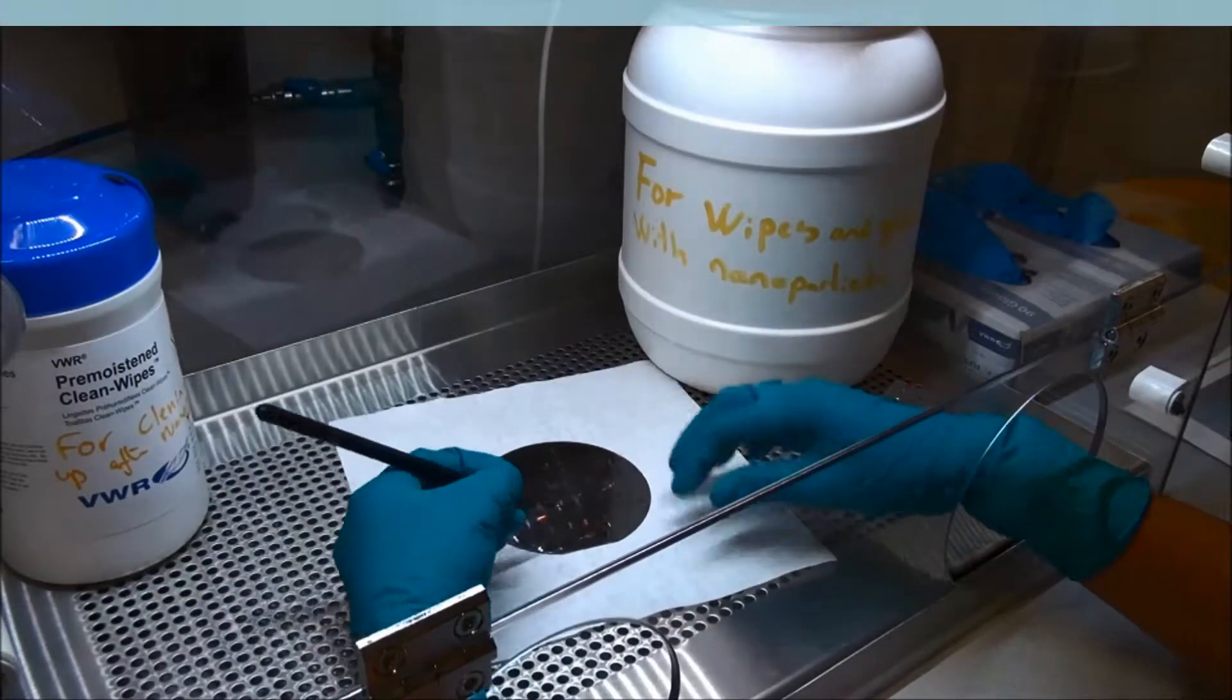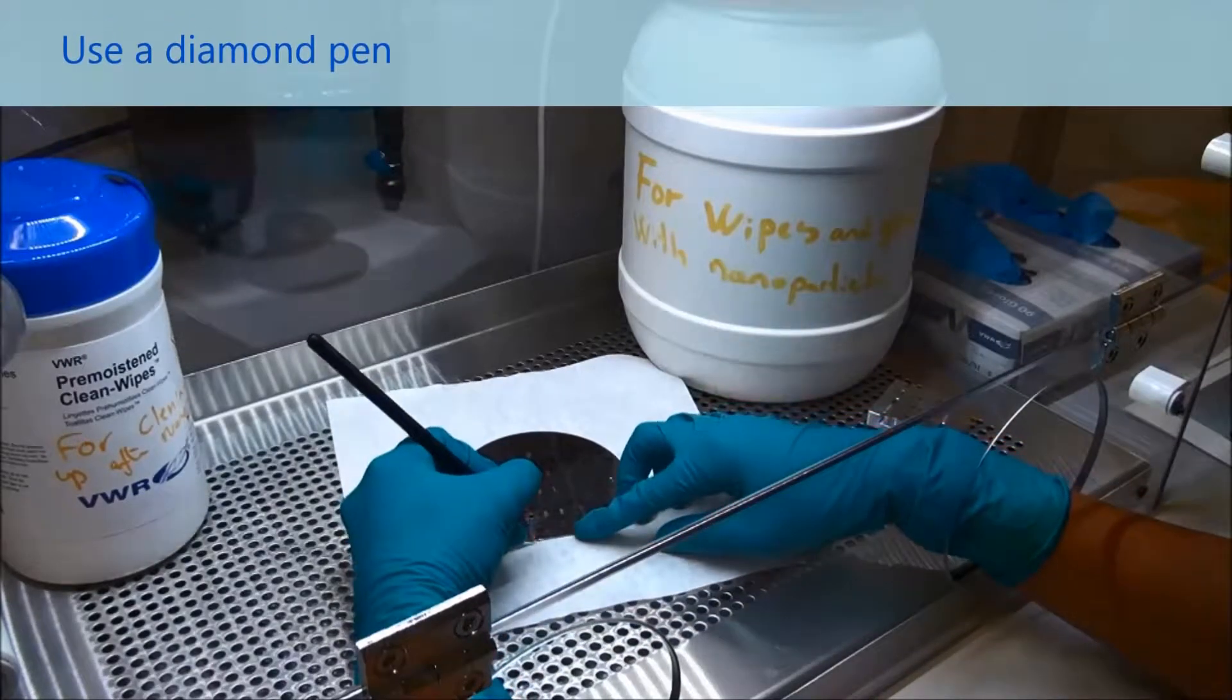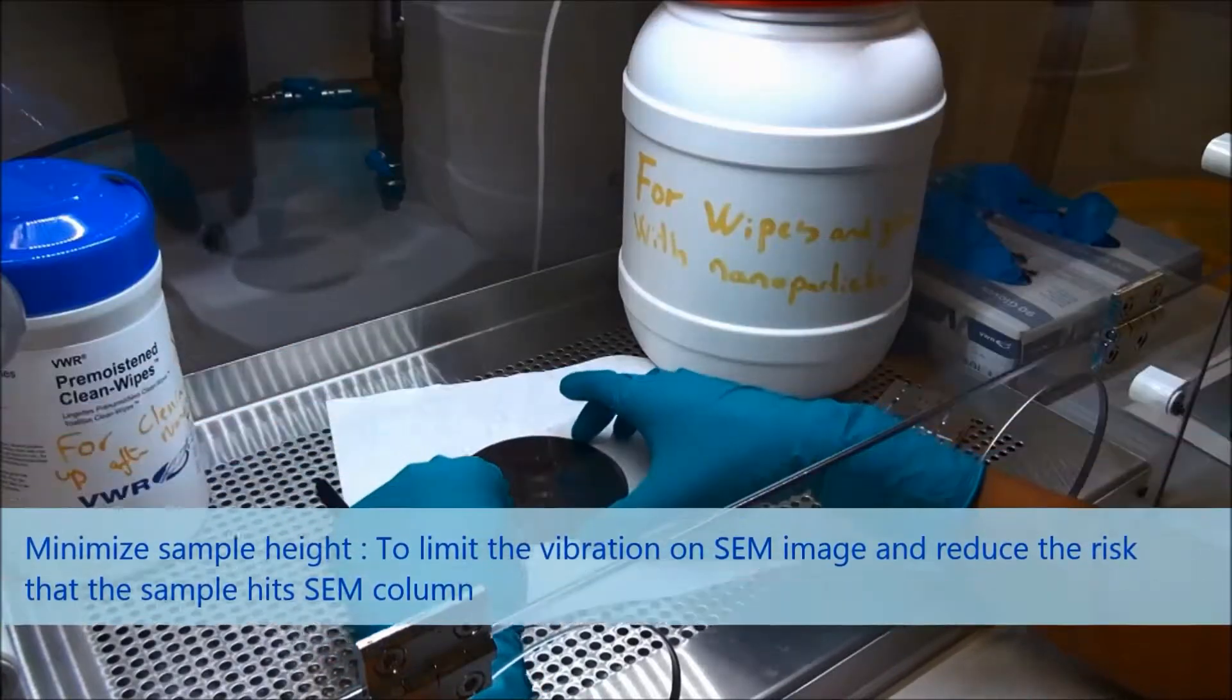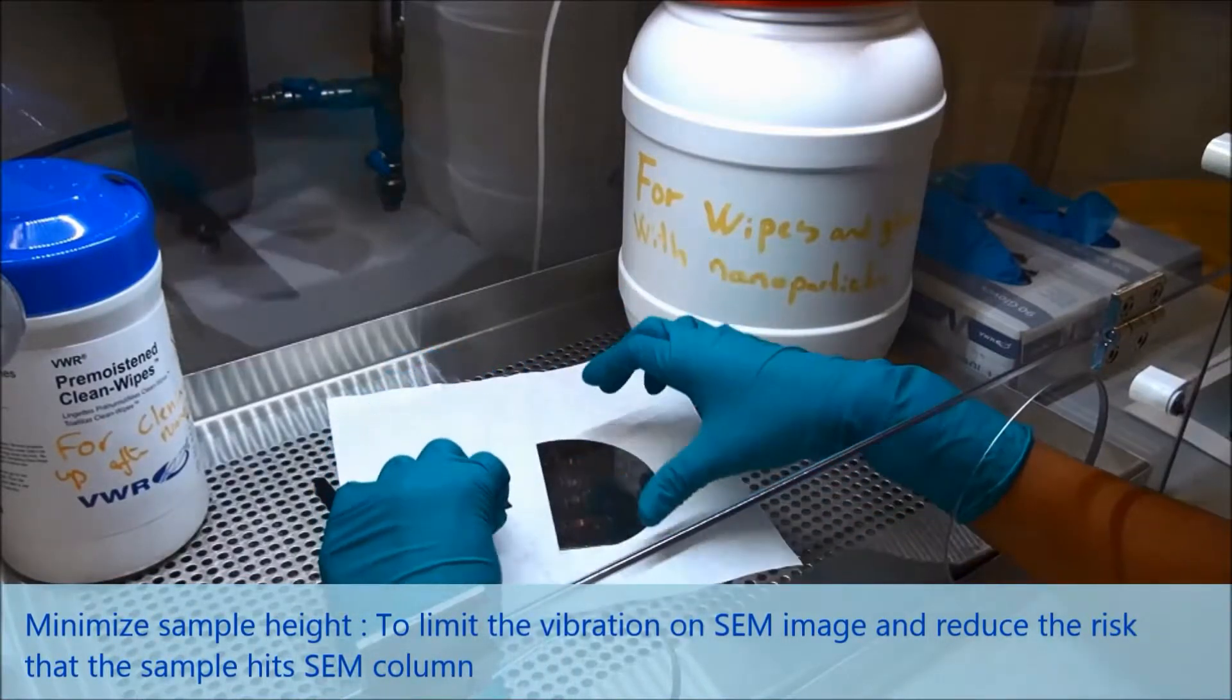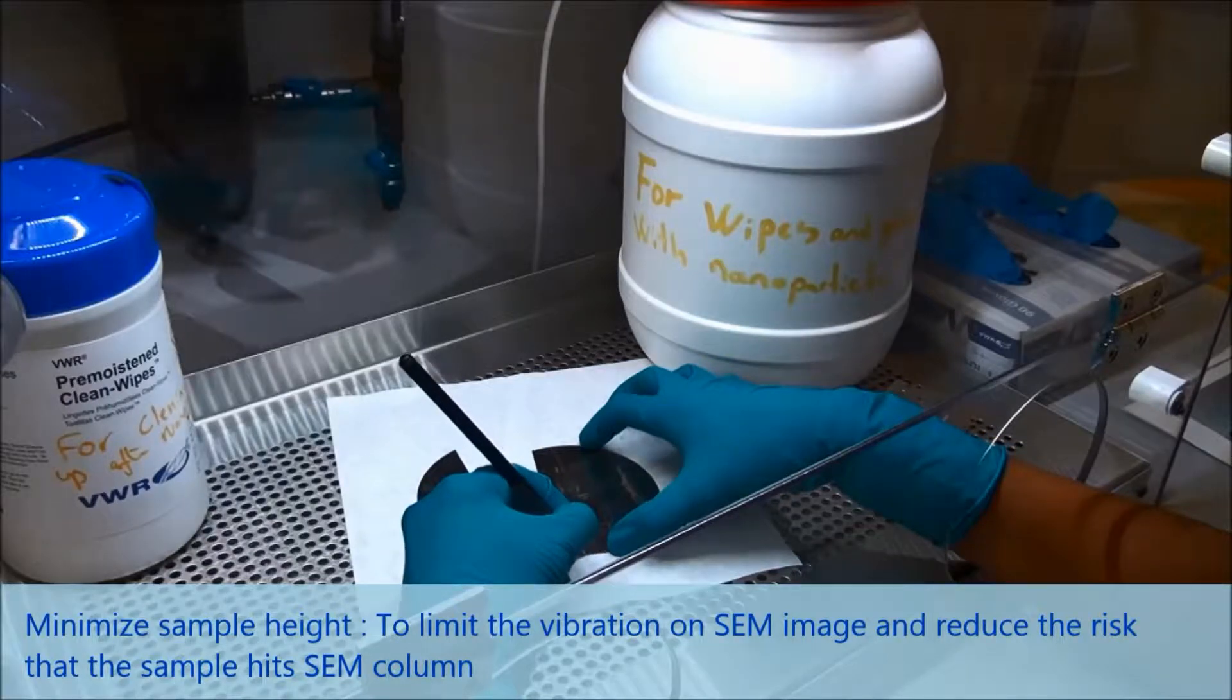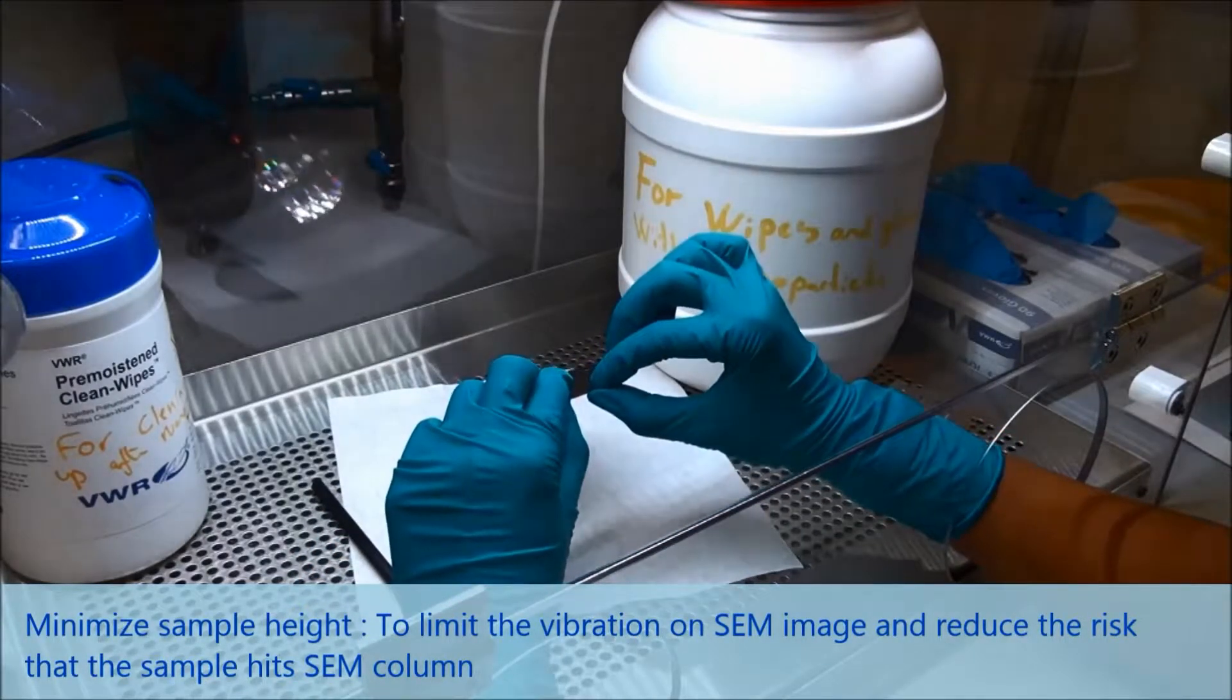Now be ready to cleave the wafer. You can make a scratch on the wafer and just smoothly bend the wafer. And now we have it, and also on the other side here, the same way.